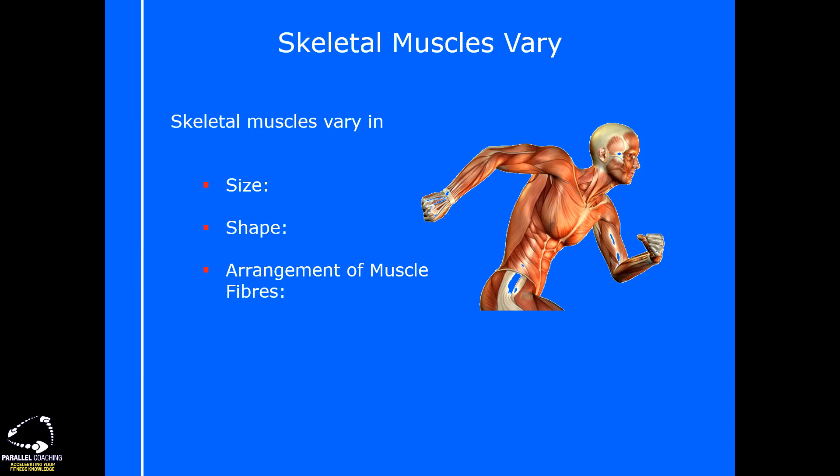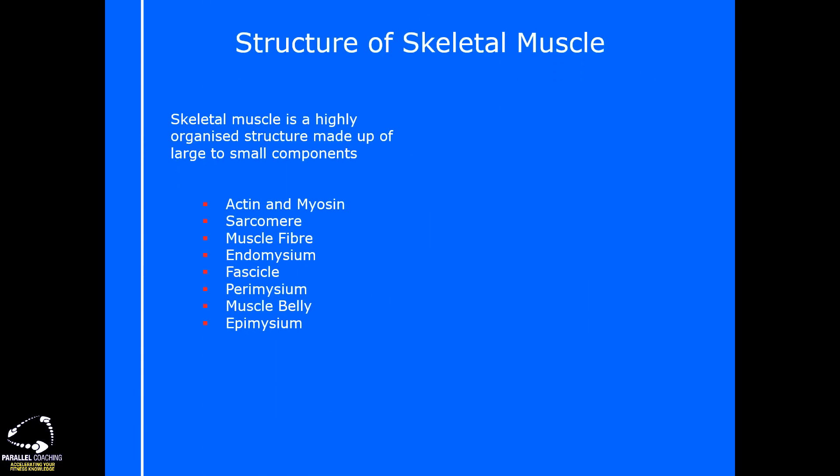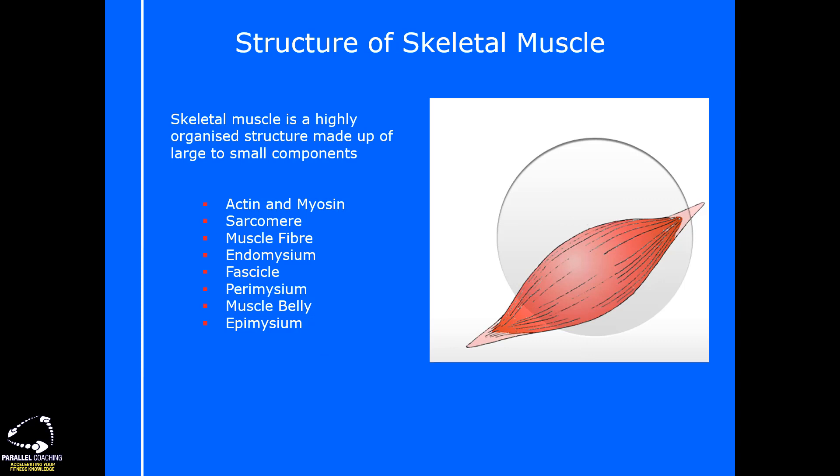You don't need to know each type of arrangement at level 3, but you do need to be aware that muscles look different because their fiber arrangements differ. Then there's oblique arrangement — like the obliques on the side of the body — where fibers run diagonal to the midline. Now let's look at the structure of a skeletal muscle. Skeletal muscle is highly organized, going from very small components all the way up to the large muscle we see, such as our bicep.